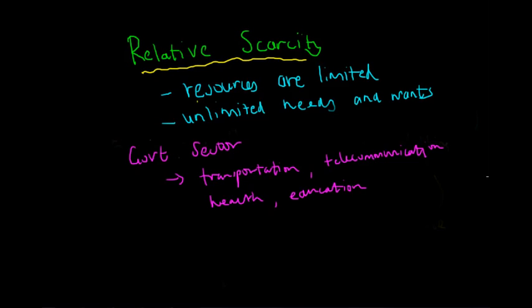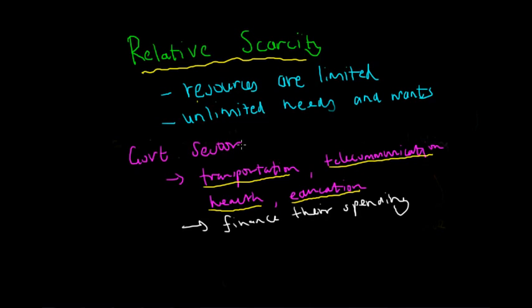This means that they also need to finance their spending and they also need money. We can see that the government sector also has unlimited needs and wants because they could never have enough teachers in the education sector or never have enough doctors in the health sector. They can never have technological improvements in transportation, for example. They can never have an upward limit to the effectiveness of transportation or telecommunication, so their needs and wants are also unlimited.